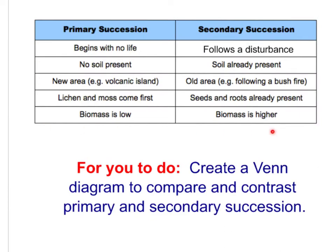Here's a chart highlighting some of the things we've already talked about, with a few more compare and contrast items. Read through those — primary succession versus secondary succession. Here's an assignment: create a Venn diagram comparing and contrasting primary and secondary succession. How many things are unique to each type, and what is similar between both?